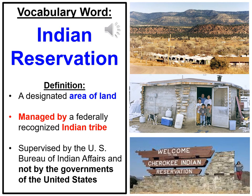To continue our lesson, we need to understand this vocabulary word: reservation — specifically, Indian reservation. A reservation is a designated area of land managed by indigenous people and Indian tribes, but also supervised by a United States government agency called the Bureau of Indian Affairs. In the Indian reservations, this is where a lot of Native Americans live by choice to help keep their culture and traditions. It's separated from blending in or assimilating into American culture. An Indian reservation is an area of land where Native Americans live with other people from their tribe.